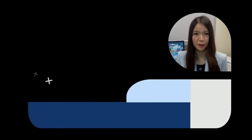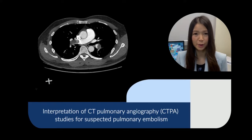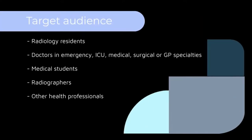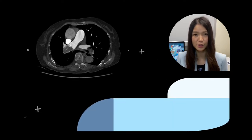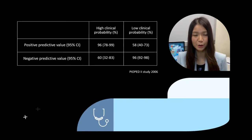Hi, this is Dr. Tiffany Soe, radiologist. Today I'm going to go through the interpretation process for a very commonly requested study, a CT pulmonary angiogram, which is otherwise known as a CTPA. A CTPA is the study of choice at most institutions for evaluation of patients with acute pulmonary embolism, particularly in patients with a high clinical pre-test probability of pulmonary embolism.